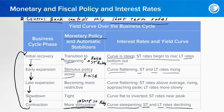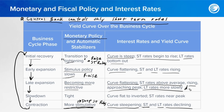In the late expansion phase, central bank policy becomes more restrictive. The curve flattens as short-term rates rise above average and approach their peak, while long-term rates rise more slowly. Then in the slowdown phase, the central bank continues raising rates, putting short-term rates near their peak. This is when the yield curve becomes flat to inverted.